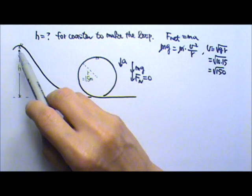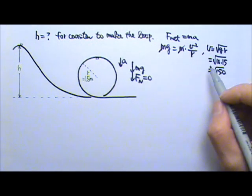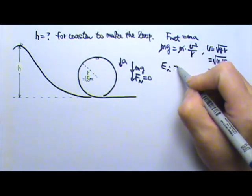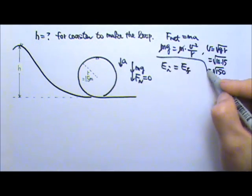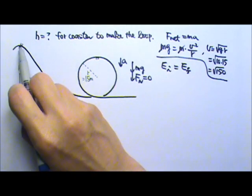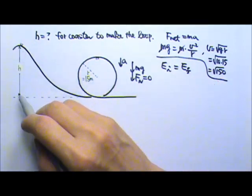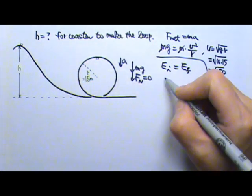If I know the speed over here and I want the height, I can use the idea of conservation of energy. No friction and air resistance, so the total mechanical energy stays the same. Initially the coaster up there starts from rest, so no kinetic energy. There is only mgy and there is no spring involved, so just mgy.